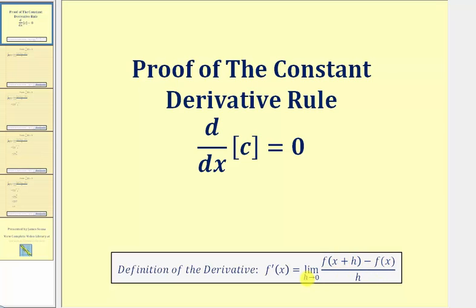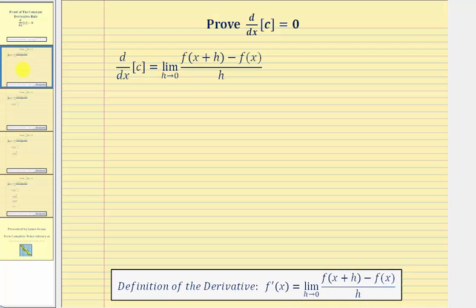Some textbooks use delta x instead of h. We'll be using the definition in this form. So again, our goal here is to prove the derivative of a constant with respect to x is equal to zero.